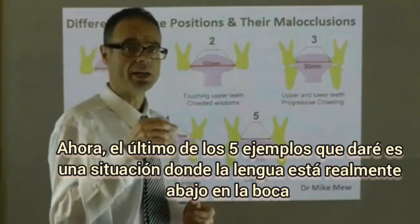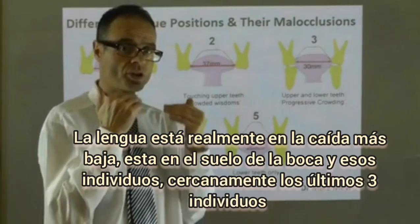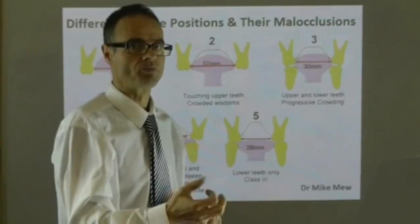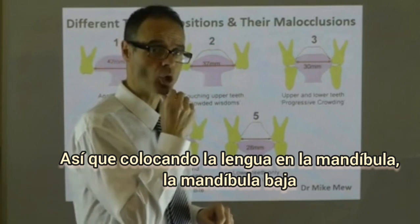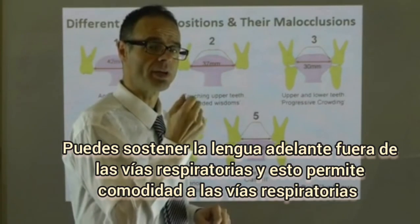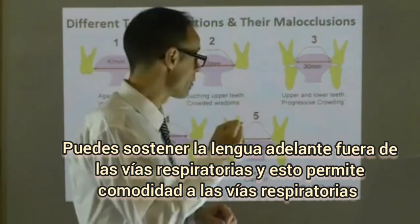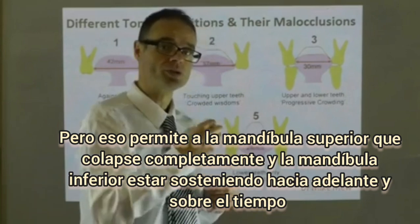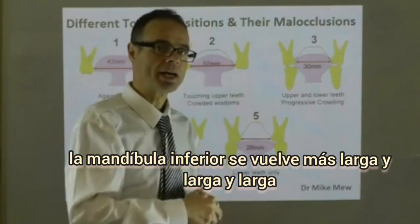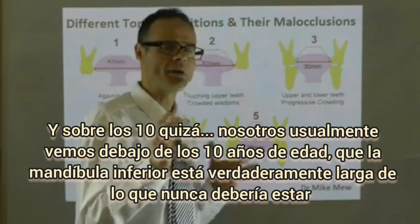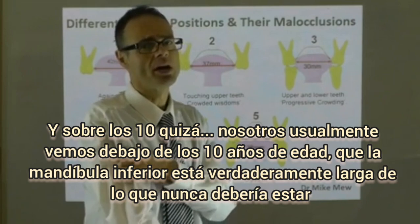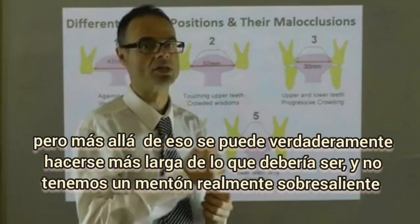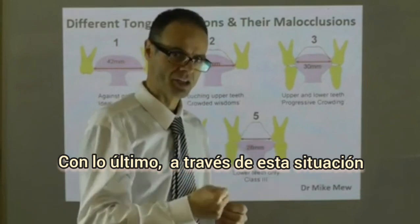The fifth example is a situation where the tongue is very low in the mouth — actually dropped into the floor of the mouth. These individuals are nearly all class three. By placing the tongue in the mandible, the lower jaw, you can hold the tongue forward out of the airway, which allows a comfortable airway but allows the top jaw to collapse completely. The bottom jaw is held forwards, and over time it becomes longer and longer. Under about 10 years old, I don't think the bottom jaw is truly larger than it ever should be, but beyond that it can truly get larger, resulting in a real jutting-out chin — the frank class three situation.